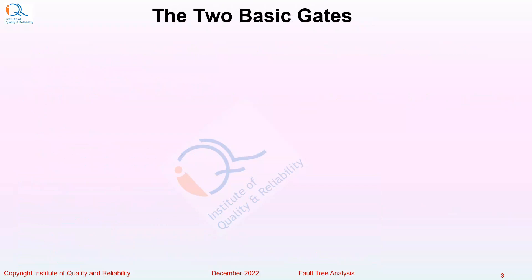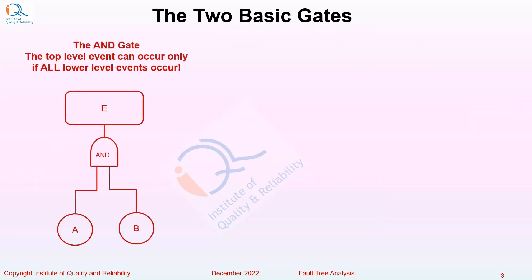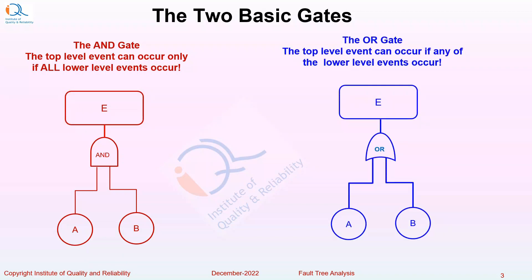The two basic gates used in Fault Tree Analysis: the AND gate, wherein the top-level event can occur only if all the lower-level events occur, as shown in this diagram. The OR gate — the top-level event can occur if any of the lower-level events occur.